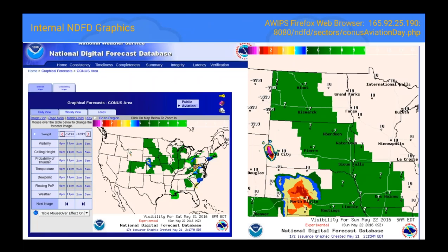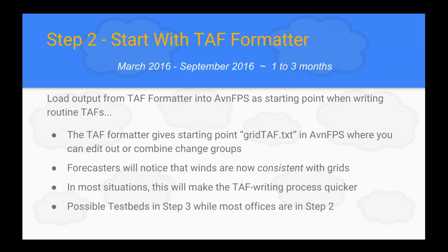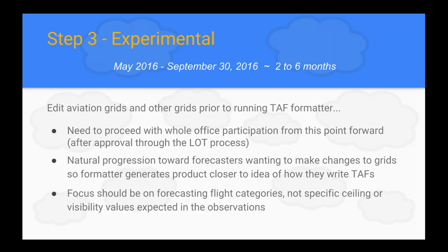Notice that everyone in Central Region is able to internally see the visibility and ceiling height grids. Internal NDFD graphics are available in your AWIPS Firefox web browser — I have the address at the top of the screen. You'll see a lot of 7s and 10s for visibility; the 10-mile visibility is white, which is why it looks a bit odd on the national picture. This is a way you can see regionally or nationally what your neighbors are doing, and you're also in ISC and GFE. Everybody has step one, so hopefully you're starting your TAFs with your TAF formatter — that's step two. The new TAF formatter is improved, so I think you'll like it.